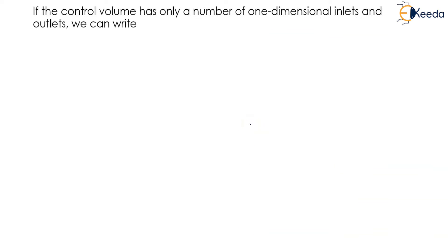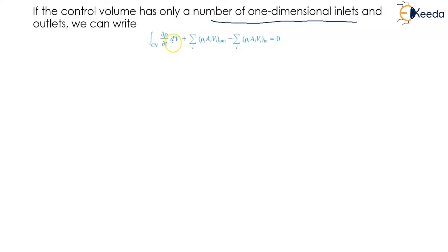If the control volume has only a number of one-dimensional inlets and outlets, we can write: ∂ρ/∂t multiplied by dV in the control volume, plus the summation of ρAV for the outlets minus the summation of ρAV for the inlets, is equal to zero.